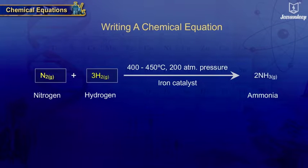Writing a chemical equation: The substances that undergo change are called reactants and substances formed at the end are the products of the reaction.